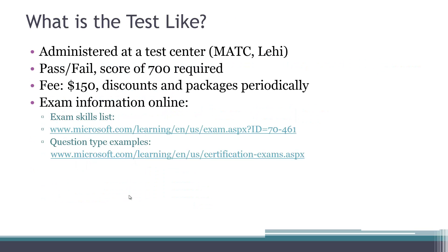The test is administered at a testing center — there is a Prometric testing center where you make arrangements, schedule an appointment, and sit down to take the test. The test is pass or fail; it's not graded on a scale, and you need a score of 700 to pass. A score of 701 is a passing score, just like a score of 955. Microsoft doesn't publish their grading methodology, but it seems like that score of 700 is out of a possible 1,000.